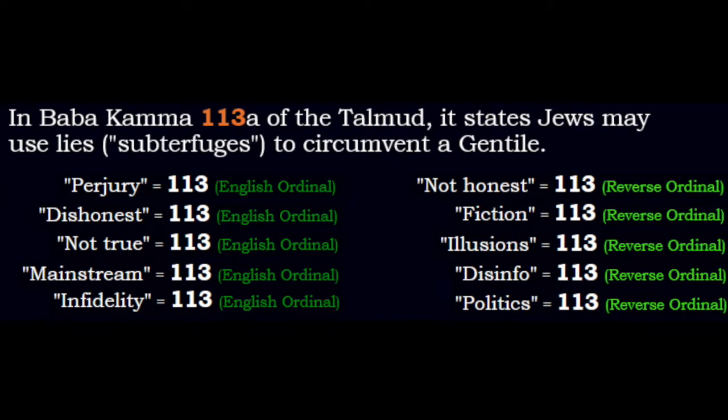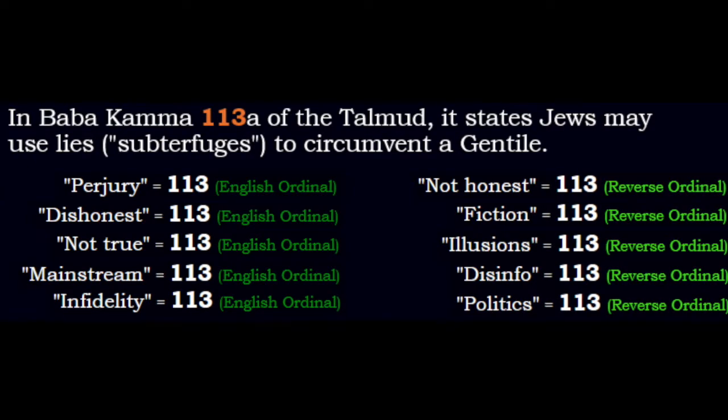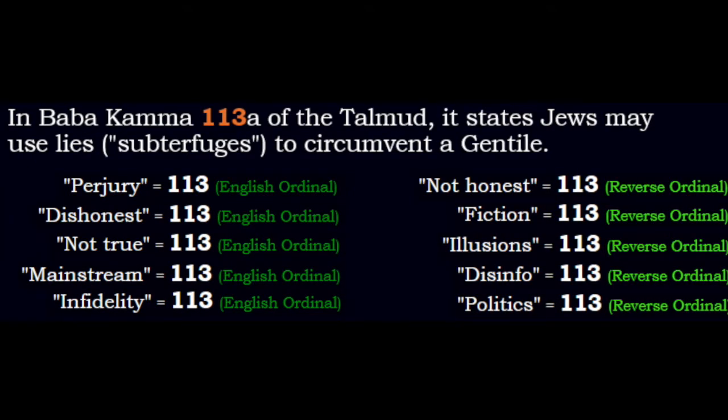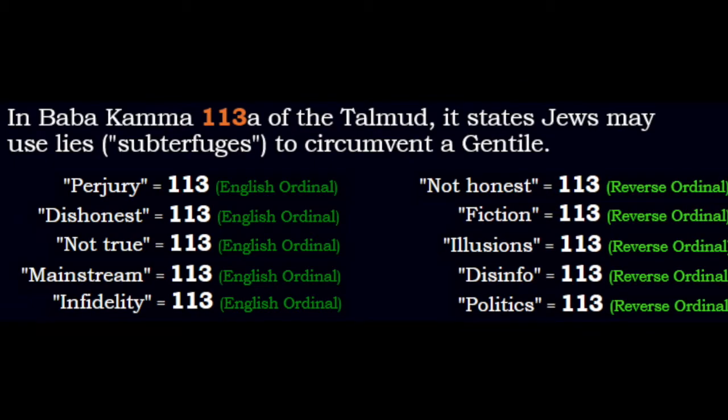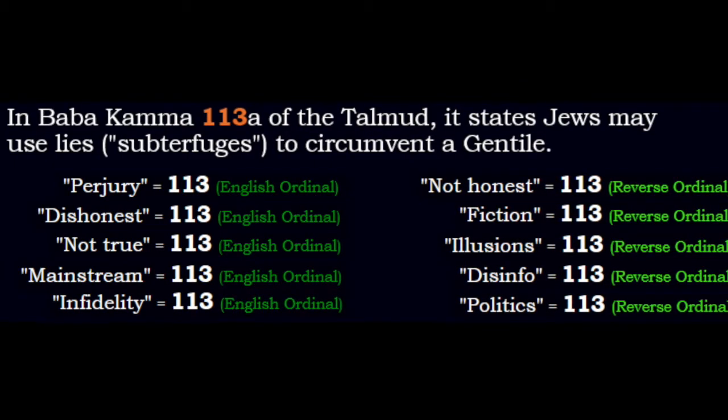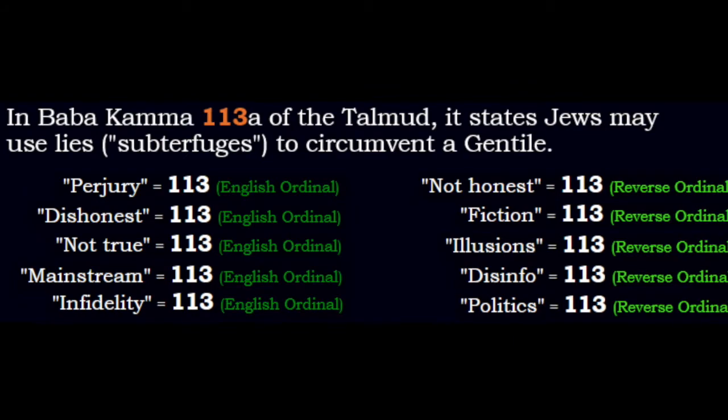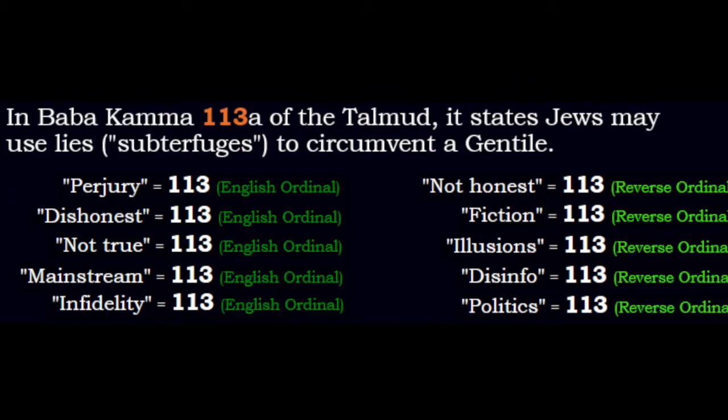There's also a passage in the Talmud associated with the number, Bava Kama 113a. A Jew may use lies to circumvent a Gentile. I paraphrase, of course. And so, being born on this date, what does that mean?